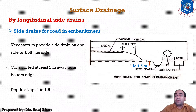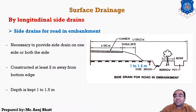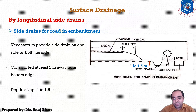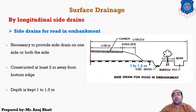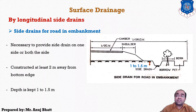The drainage should be constructed at least 2 meters from the edge of the embankment — this is the bottom edge of the embankment. From here, the drainage should be constructed so that the minimum distance is 2 meters. This is how we can provide the drainage, and this is called a side drain, also known as a longitudinal drain.